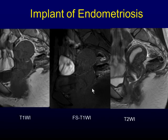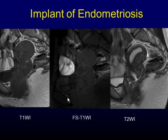Implants of endometriosis represent small areas of hemorrhage. These implants can be visualized on T1 with fat saturation. In this case, strong adhesion is noticed at the posterior uterus. The hemorrhagic region is difficult to detect on T1-weighted image but is easier to see on T1 with fat saturation.